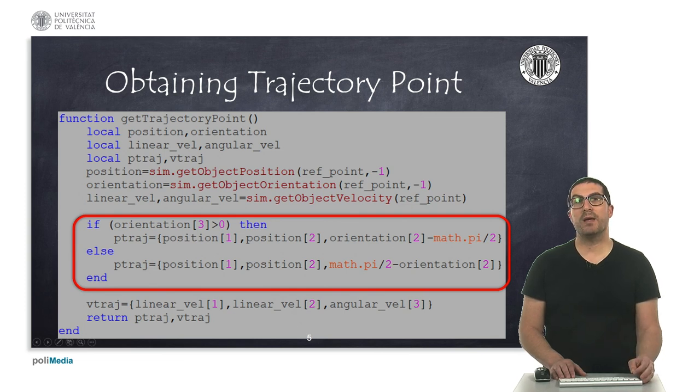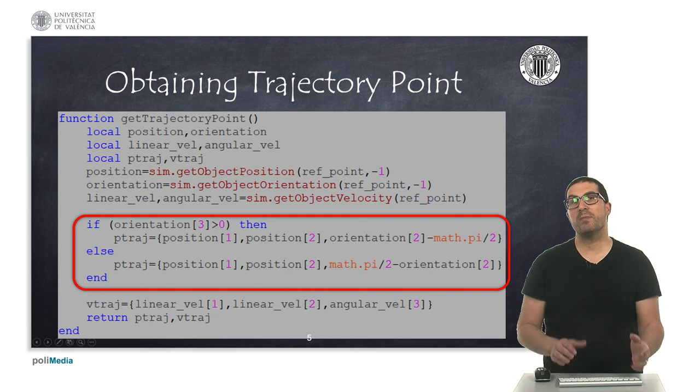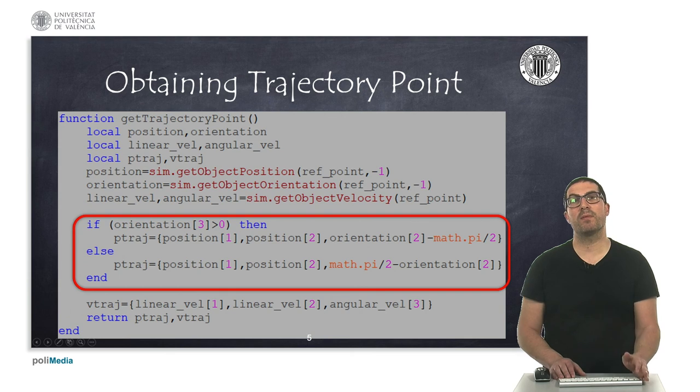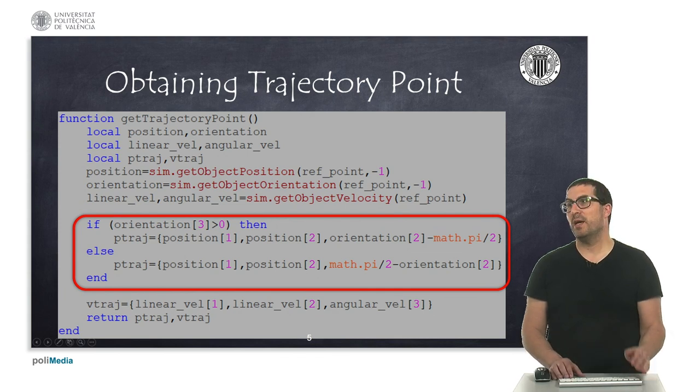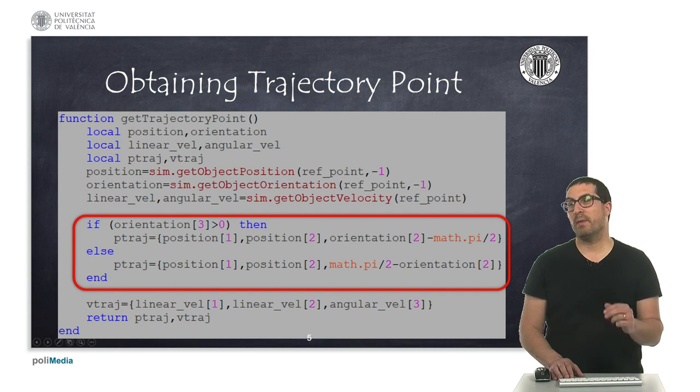In particular, for the orientation, you have to see here that we are using a weird expression to compute the orientation. This is, or the reason behind that is because the reference system of the point attached to the path is different from the one in the world. And we need to, or I suggest it to implement the code as I'm providing here. Anyway, you can try to check if everything is correct by printing the values of this trajectory on the console and make sure that you're getting the correct values.